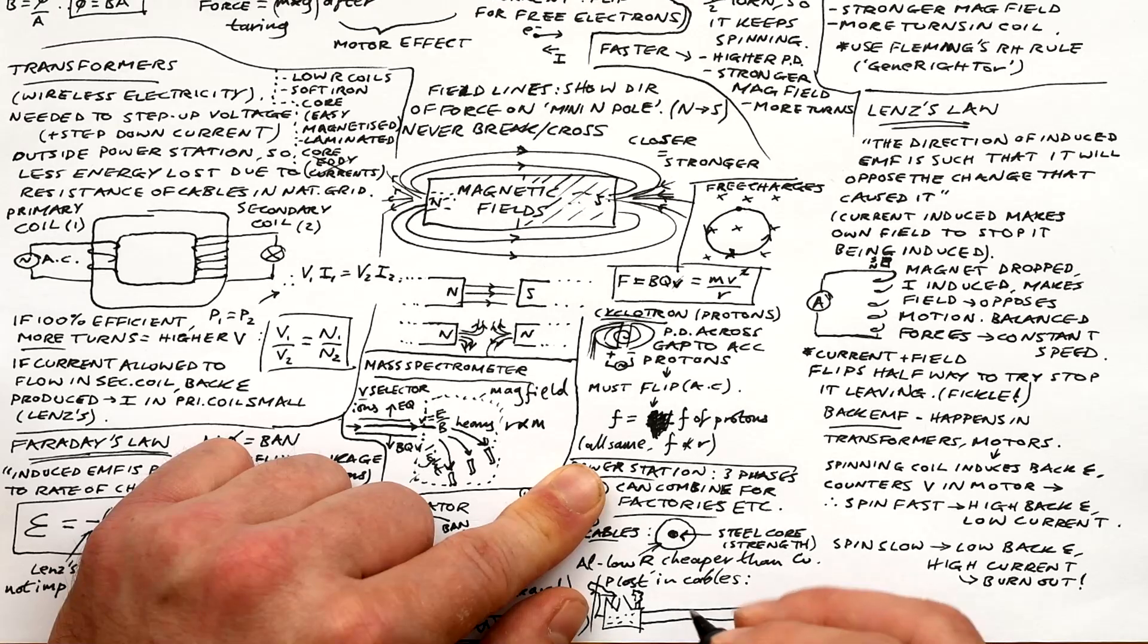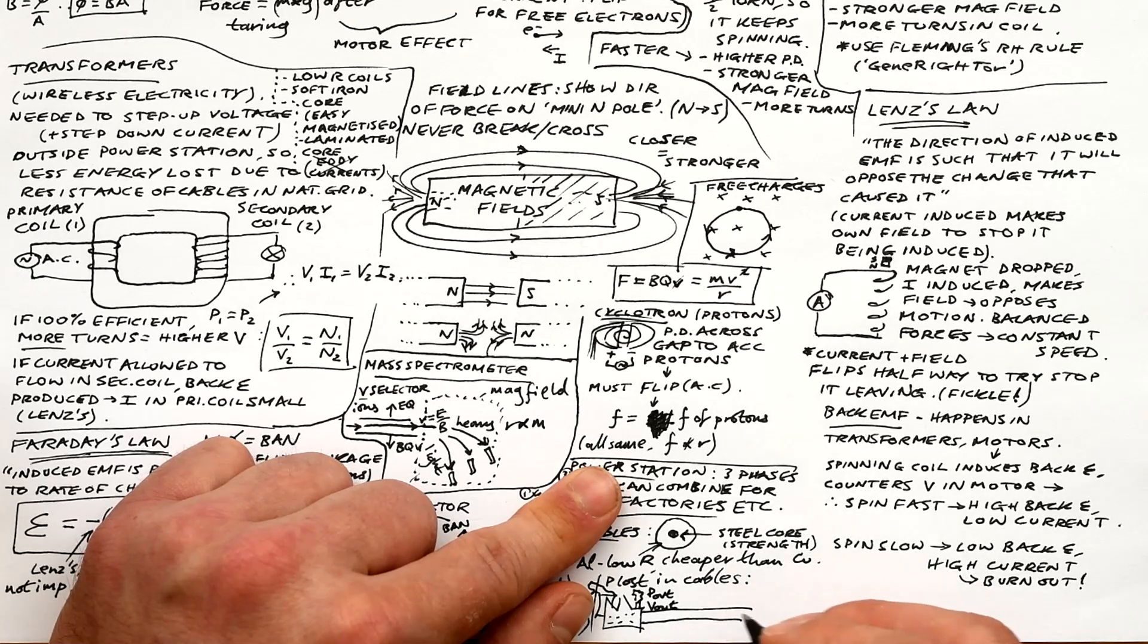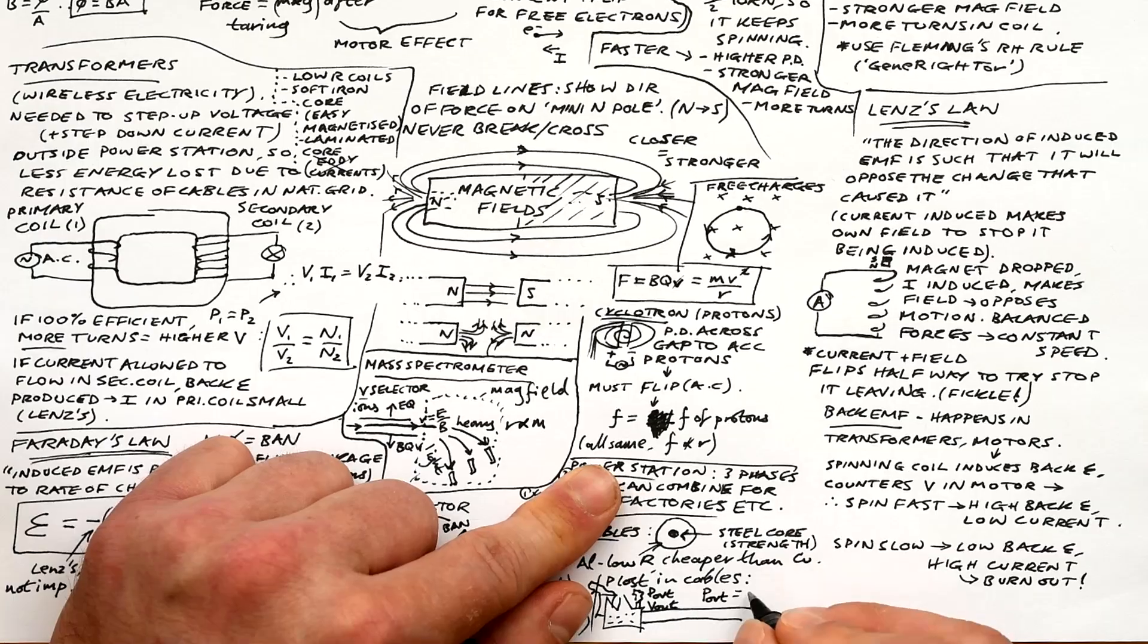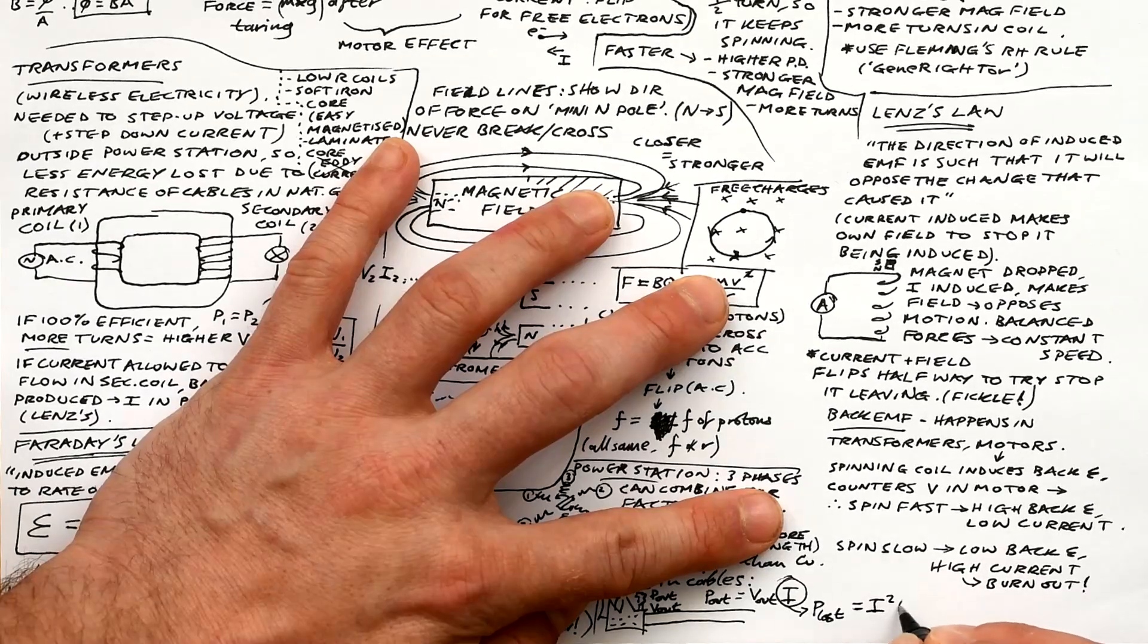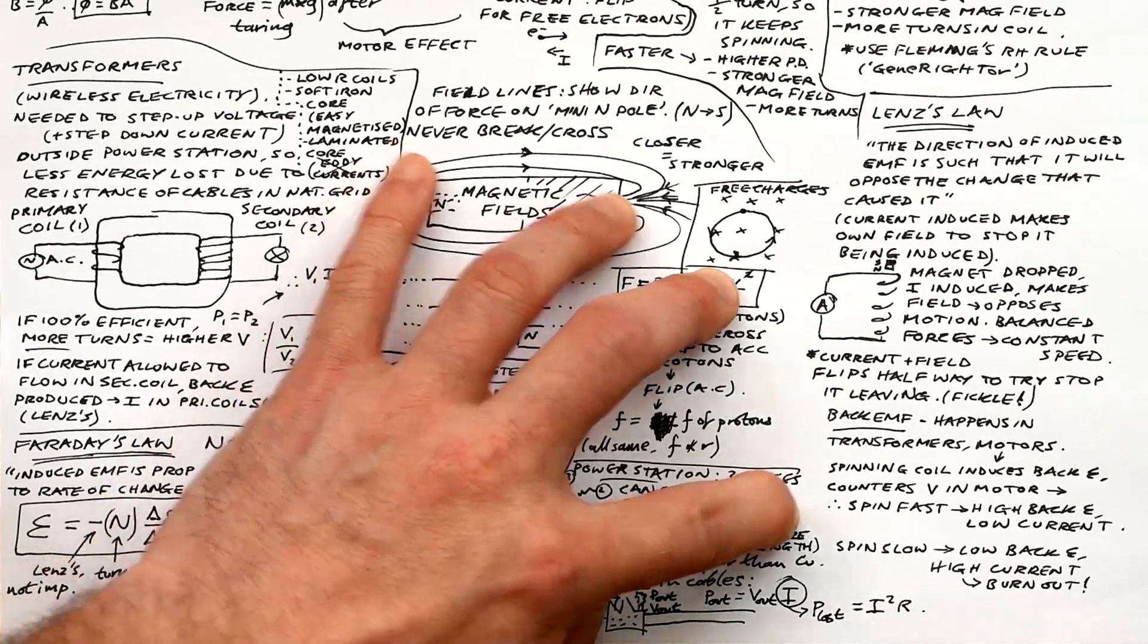Finally, to find the power lost in cables, we can't just use the voltage from the power station and do V squared divided by R. No, instead we need to do P equals VI for the power station first to get the current that's coming out. And then we plug that into I squared R to find the power lost in the cables.